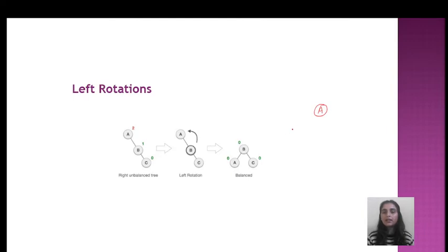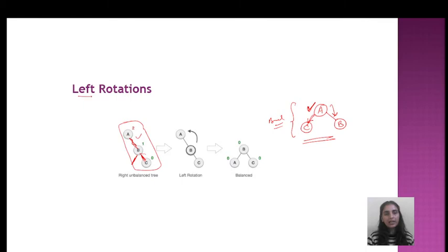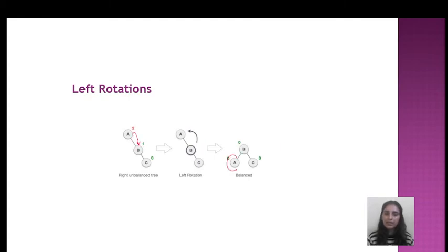A common mistake students make is thinking A is connected to both B and C directly. But A is directly connected to B, and B is directly connected to C — A is not directly connected to C. So we perform a left rotation: the topmost node is moved to the left side. This gives us a balanced AVL tree. Left rotation is very simple — A is connected to B, and B is connected to C, and after rotation the tree becomes balanced.